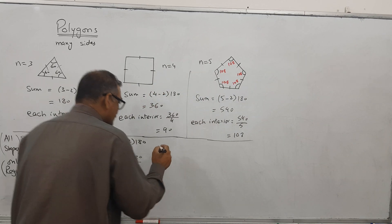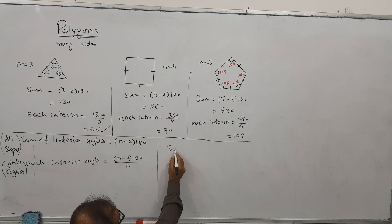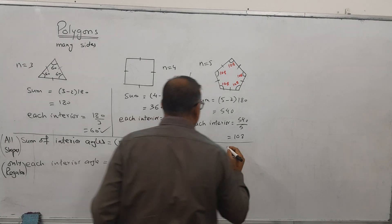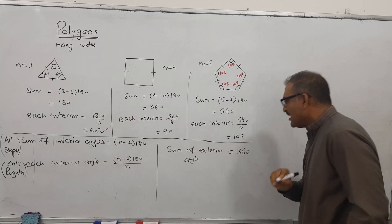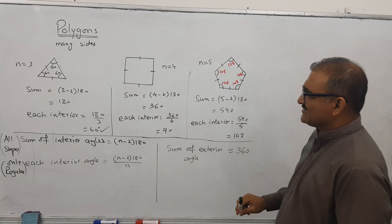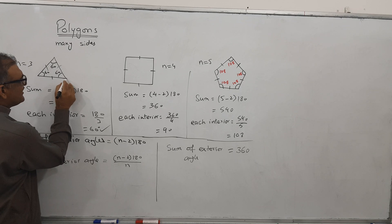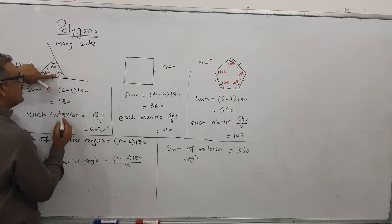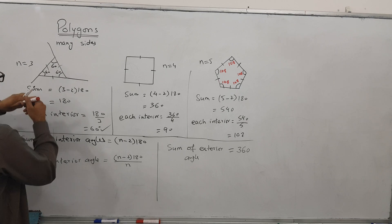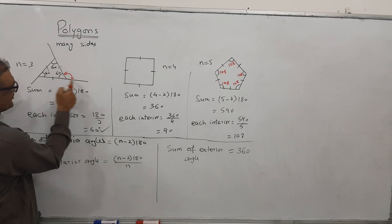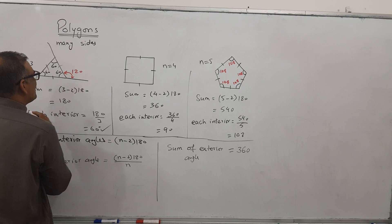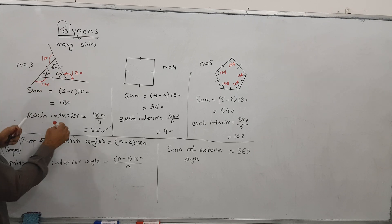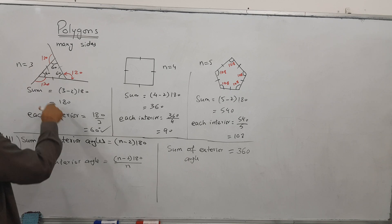Now I'm going to teach you another formula: the sum of exterior angles. The sum of exterior angles equals 360. If you extend the lines of the triangle, each interior angle is 60, so each exterior angle is 180 minus 60 equals 120. And 120 plus 120 plus 120 equals 360.